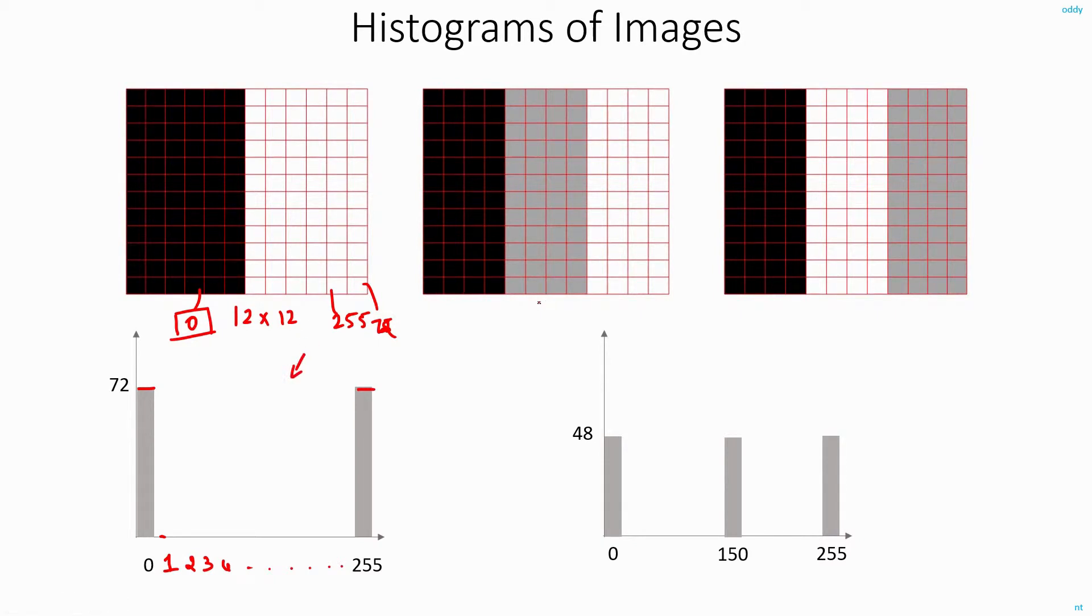Let's say I have another image. And here in this image, this patch has the pixel intensity value of 150. Now if I plot the histogram, it will look like this. In this image, I have 48 pixels that have the intensity value of 0, and 48 that have the intensity value of 150, and 48 have the intensity value of 255. And so if I plot it, it will look like this.